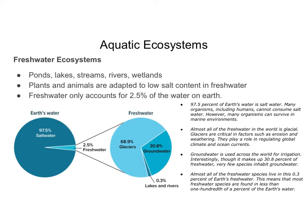Of all the freshwater on Earth, 68.9% is found in glaciers. Most of the freshwater on Earth is found in glaciers, and glaciers are critical in erosion and weathering. They play a big role in regulating the climates on Earth and the ocean currents as well.